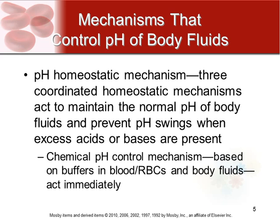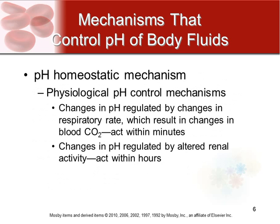There are three coordinated homeostatic mechanisms that act to maintain the normal pH of body fluid, preventing the pH from swinging in either direction when acids or bases are present. First, there's a chemical control mechanism based on a buffering system in your blood and body fluids — this acts immediately. Second, there's a physiological pH control mechanism that changes respiratory rate, which changes your blood CO2 level — this acts within a few minutes.